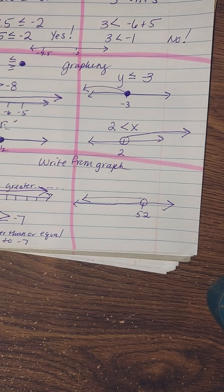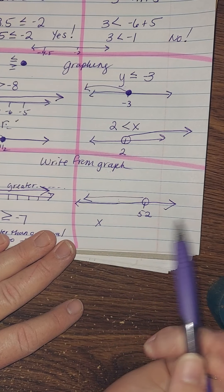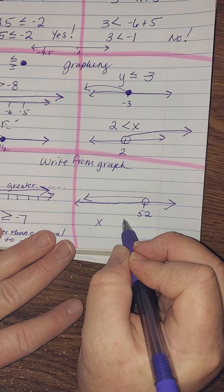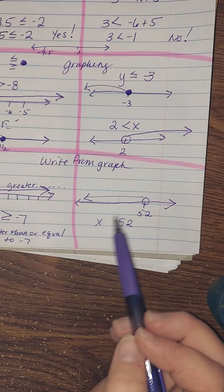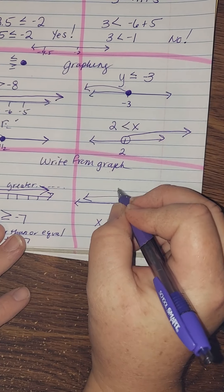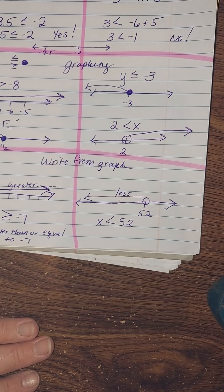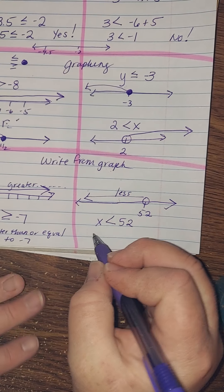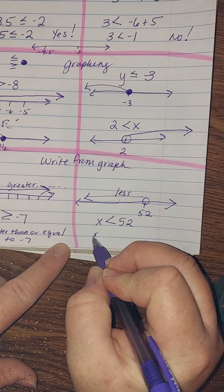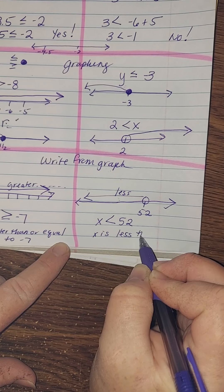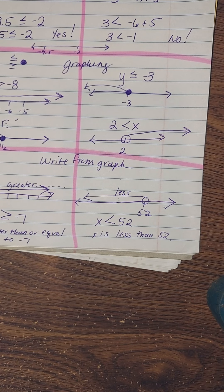Now you do the next one. I'll use x again, no line under the inequality sign, and my number is 52. Am I going right or left? Left — left is less — so I put the small end towards the variable. x is less than 52. Alright friends, that's it for today, thank you.